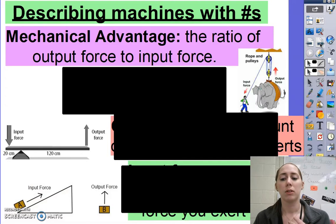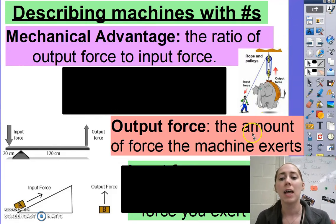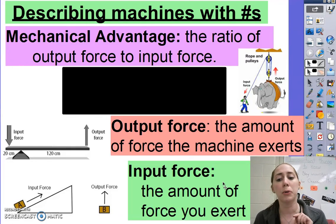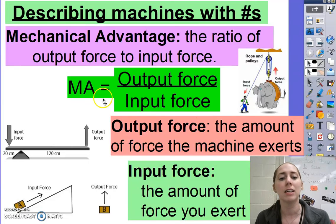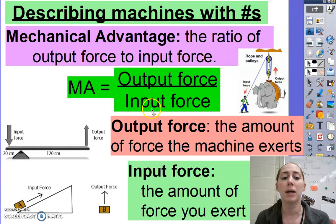Now, the way we describe how things feel easier is with mechanical advantage. And mechanical advantage is simply the ratio of the output force to the input force. Output force is what's going out of the machine, and the input force is what you're putting into the machine. And the way we represent this mathematically is mechanical advantage equals output force divided by input force.